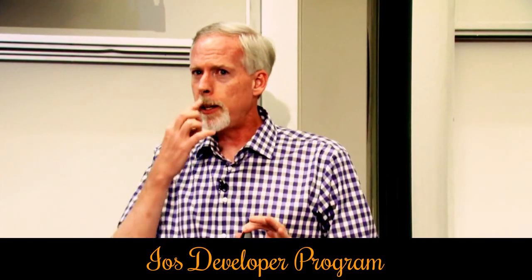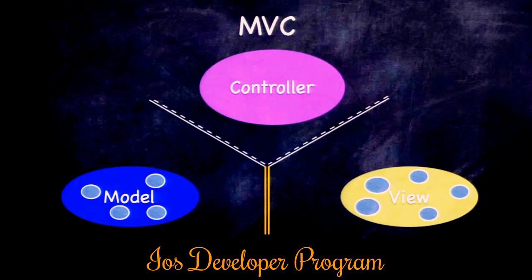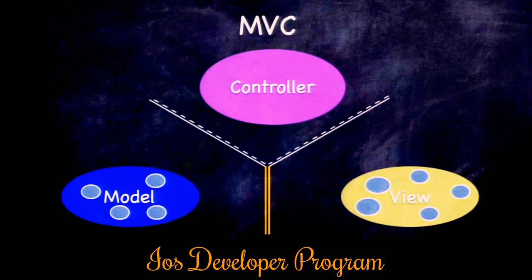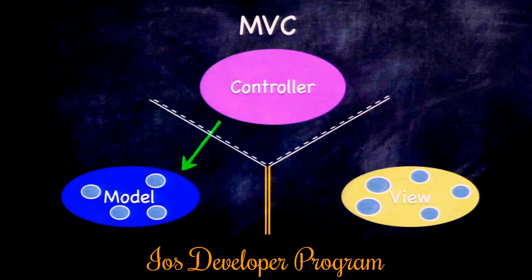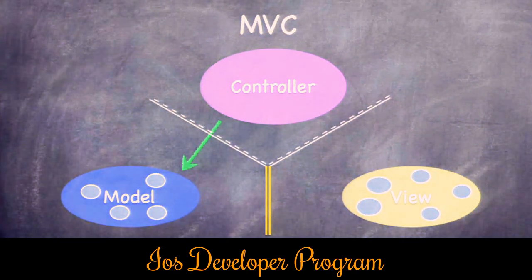Doing MVC right is about knowing where things go, but also about how to communicate between the three camps. The controller talking to the model is like a dashed white line — you can head right across. The controller has to know everything about the model and use its public API as much as it wants, because the controller's job is to present the model to the user using its view as minions.